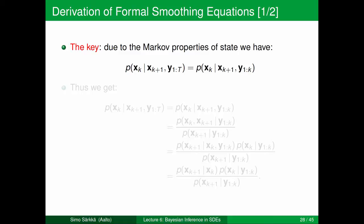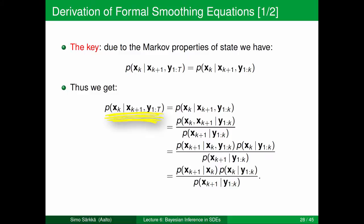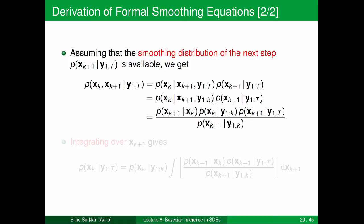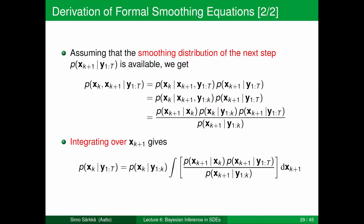To derive the smoothing equations we use the Markov properties of the state once again. The key property is that p(xk | xk+1, y1:T) equals p(xk | xk+1, y1:k) — with only measurements up to k. Using this result, the distribution on the left equals the distribution on the bottom right, which only depends on measurements up to time k, not later. Integrating both sides over xk+1 gives the recursion for the smoothing distributions: p(xk | y1:T) equals the filtering distribution times the integral of the dynamic model times the next smoothing distribution divided by the prediction step, integrated over xk+1. All terms are known provided we process the recursion backwards.